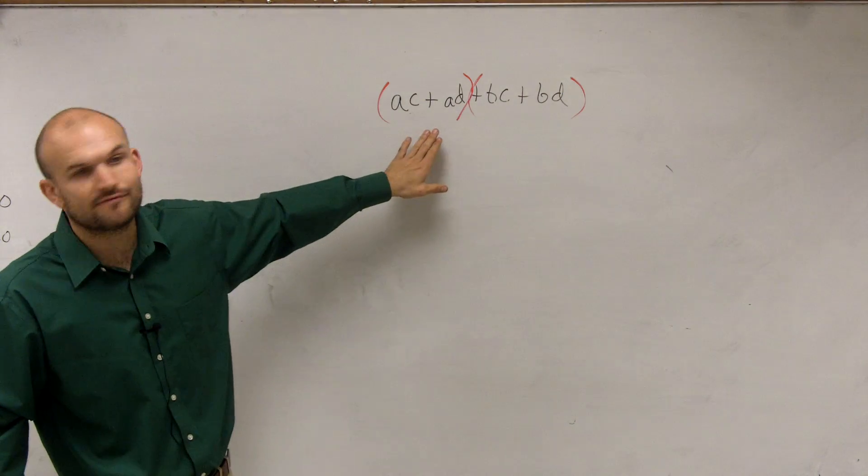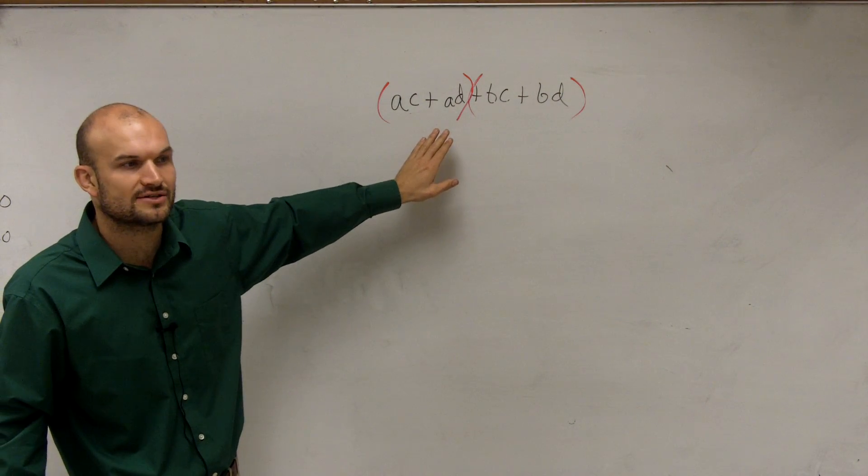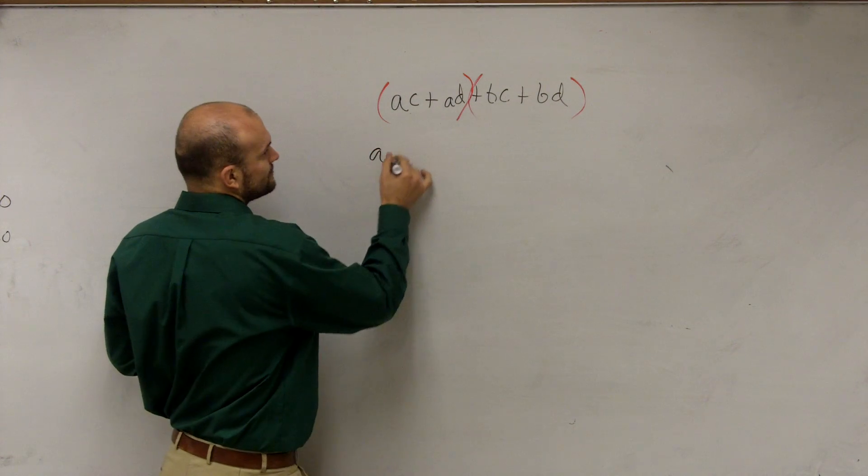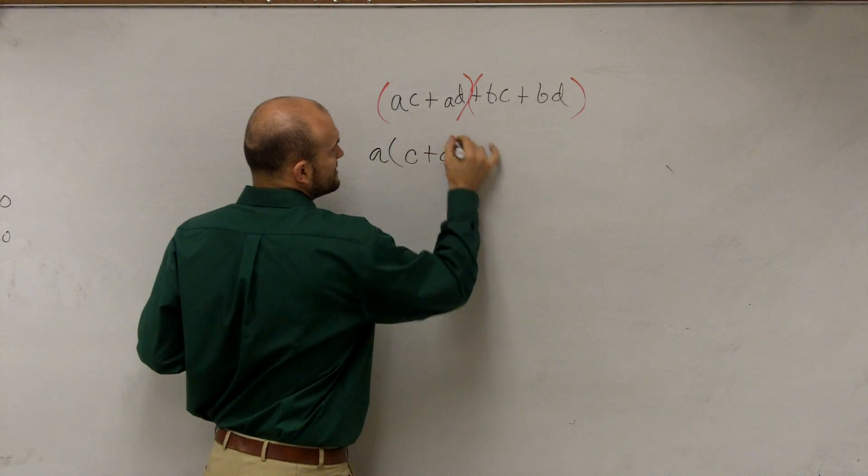But now I need to say, all right, out of my first two terms, is there anything I can factor out? And you could say, yeah, you could factor out an A, correct? So if I factor out an A, I'm now left with C plus D.